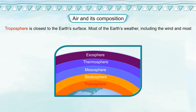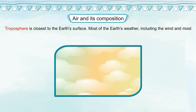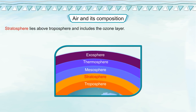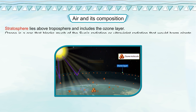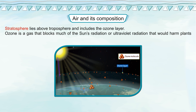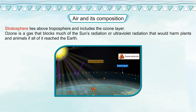Troposphere is closest to the earth's surface. Most of the earth's weather including the wind and most clouds exists in the troposphere. Stratosphere lies above the troposphere and includes the ozone layer. Ozone is a gas that blocks much of the sun's ultraviolet radiation that would harm plants and animals if all of it reached the earth.